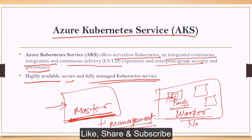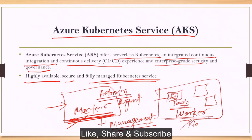I will talk about Kubernetes in more detail in my upcoming videos, but for now just understand that Kubernetes has two kinds of nodes: one is the master node and the other is the worker node. On the worker nodes, the application actually runs inside the containers. On the master node, only the management-related components work. In an ideal scenario, or best practice, we use different nodes — one for admin or management purposes, and another for executing or running our application.